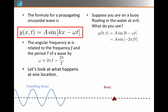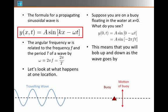Well, when I plug in x equals zero, I have a sine of zero minus omega t, or sine of minus 2 pi f t. This means that I will jiggle up and down or bob up and down as the wave goes by.